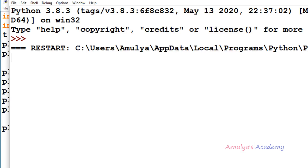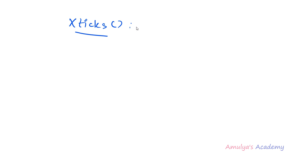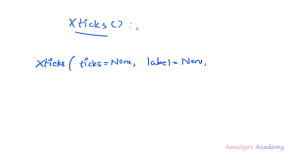To change the tick location and label we need to know the syntax of these two functions. First we will discuss about the xticks function and its syntax, then the yticks function. This function belongs to matplotlib.pyplot, so you write matplotlib.pyplot.xticks(). The parameters are: ticks (default value is None), labels (default value is None), and keyword arguments. This function will allow us to get or set the current tick location and label of the x-axis.